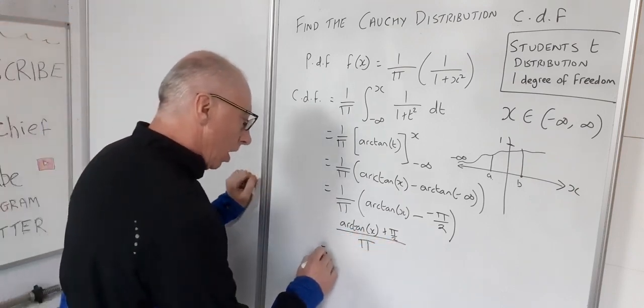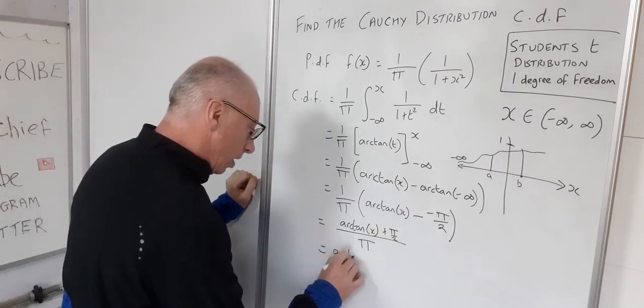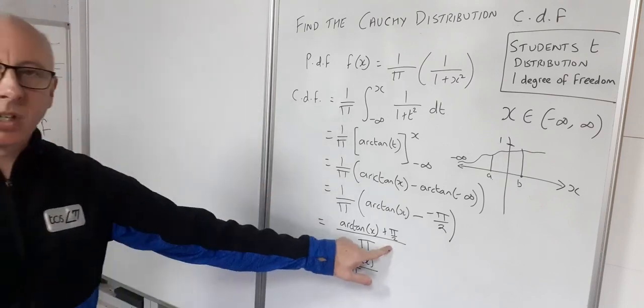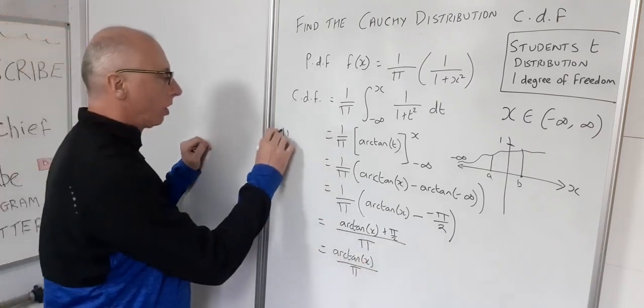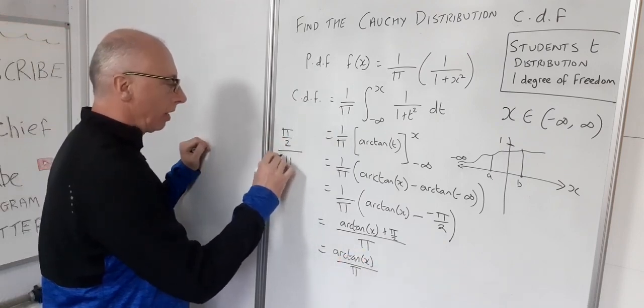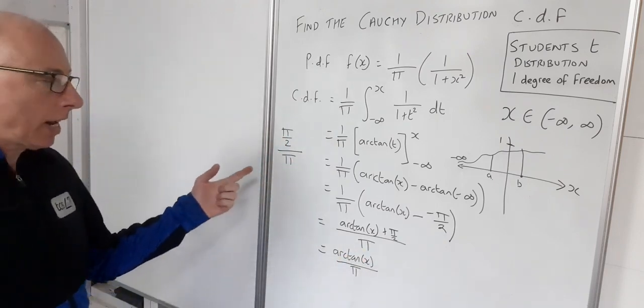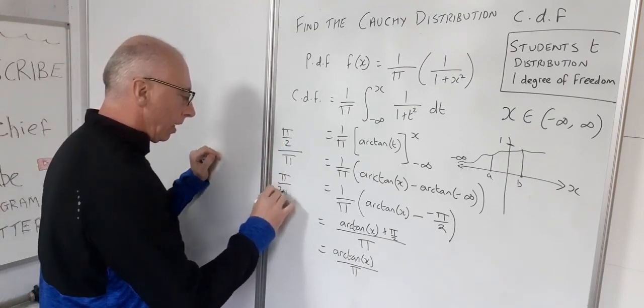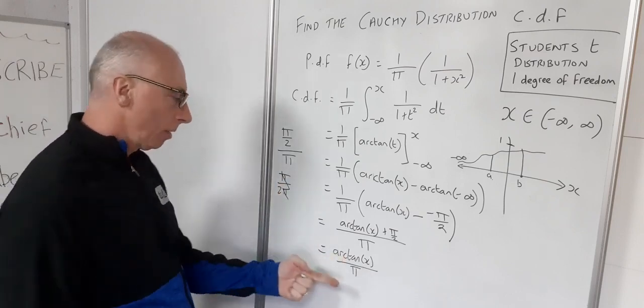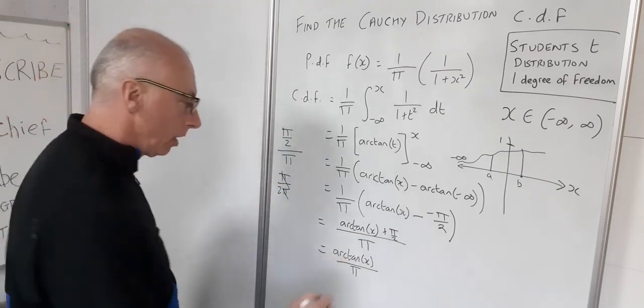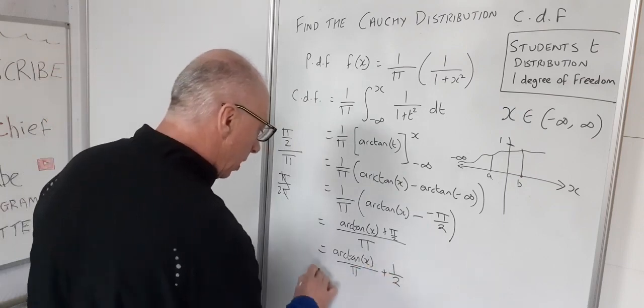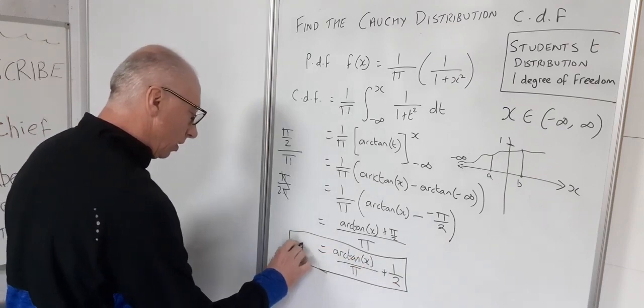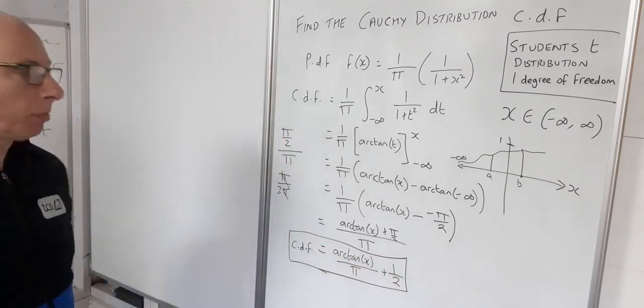So we'd have an equal sign there as well, arc tangent of x over pi. Now just have a look at this pi over 2 divided by pi. Now what we can do here is write that as pi over 2 pi which is just going to give us 1 half. So basically arc tangent of x over pi plus 1 half. And that is going to be our result for our cumulative density function of the Cauchy distribution.